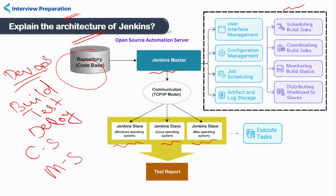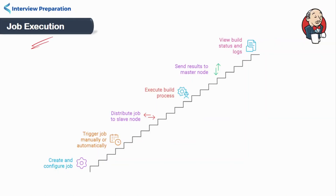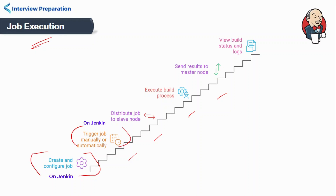Now let's understand how a job executes on a slave. The job execution in Jenkins follows a specific sequence. First, the user creates a job and configures it with all necessary parameters and build steps. Then the job is triggered either manually or automatically based on a scheduled event. The master node then distributes the job to one of the connected slave nodes.